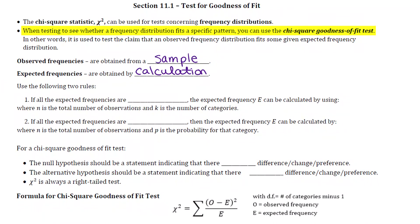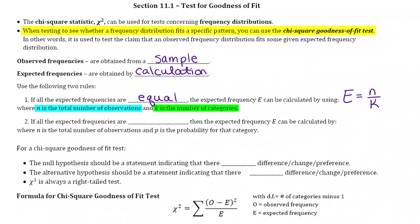There are two different ways we'll calculate the expected frequencies. If we don't have any data regarding the breakdown of percentages for those categories, we're going to let all of the frequencies be equal to each other. We take the total number of observations and divide them evenly between all categories. So our expected frequency E equals N over K — a very simple calculation.